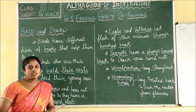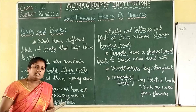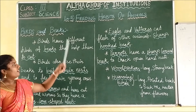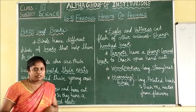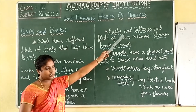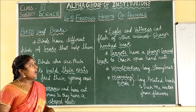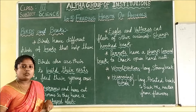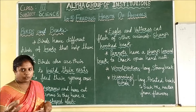And in which lesson are we now? Can you remember which lesson? We are in our fifth lesson. So what is the name of the fifth lesson? It is 'Feeding Habits of Animals.' What is feeding habits of animals? It means the eating habits of animals.